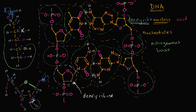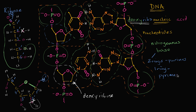We have different names for these nitrogenous bases. The ones with two rings — the general categorization — we call them purines. And if you have one ring, we call these pyrimidines.